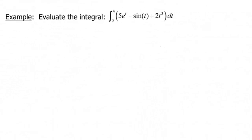So for this example, we've got the integral from 0 to 4 of the function 5e to the t minus sine of t plus 2t to the third power. So again, you'll notice we have differences in sums, so all we can do is just do the integral or the antiderivative of each piece separately.